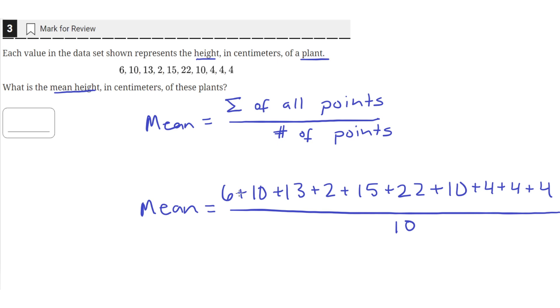So if you got your calculator out and added all of these values together you would get 90. And that divided by 10 is equal to just 9. So the mean height in centimeters of these plants is 9 centimeters.